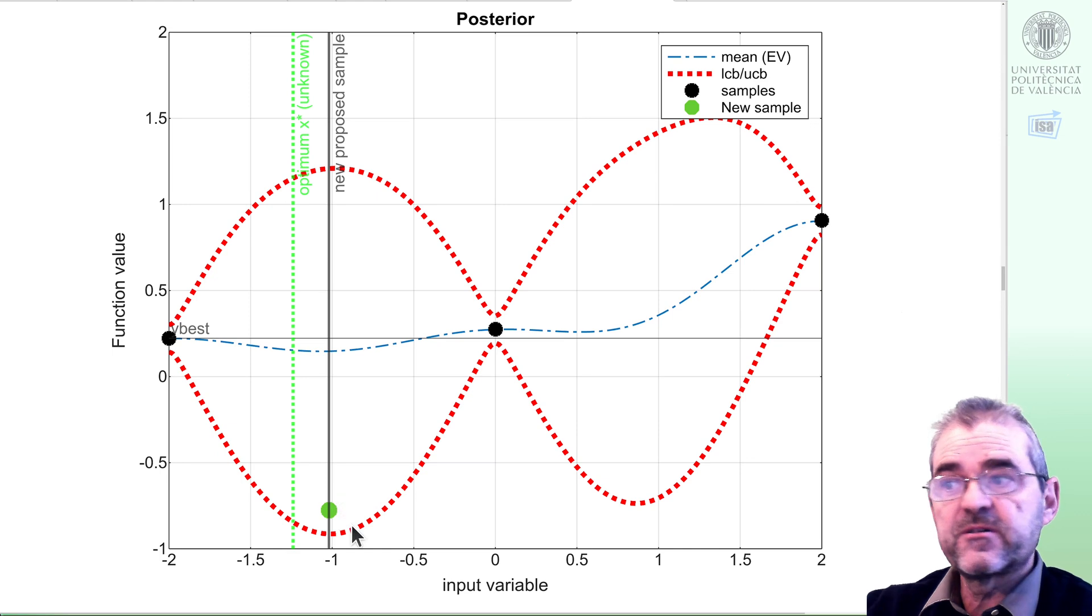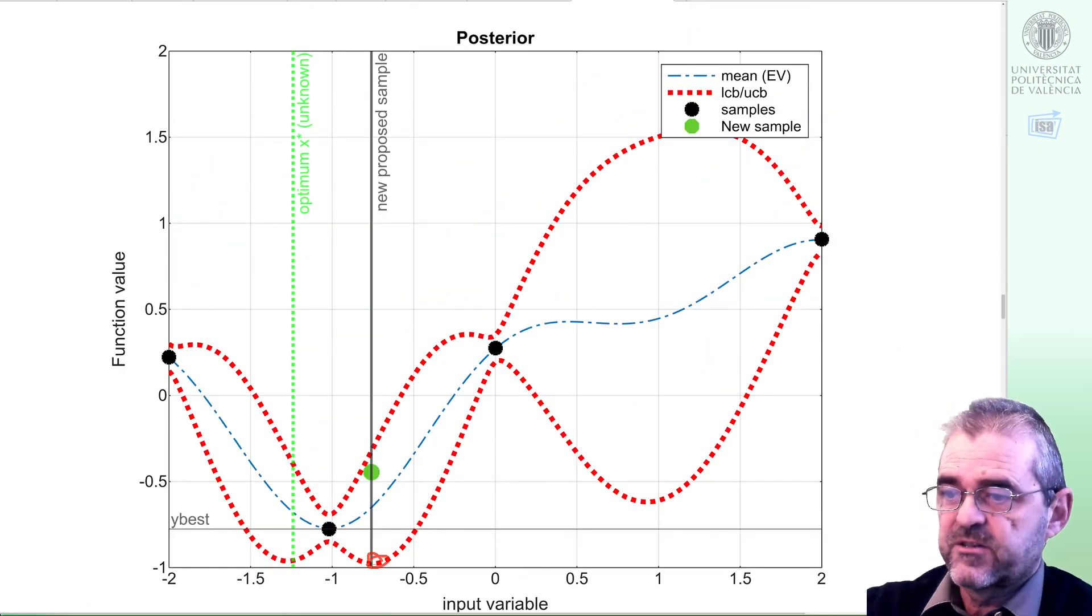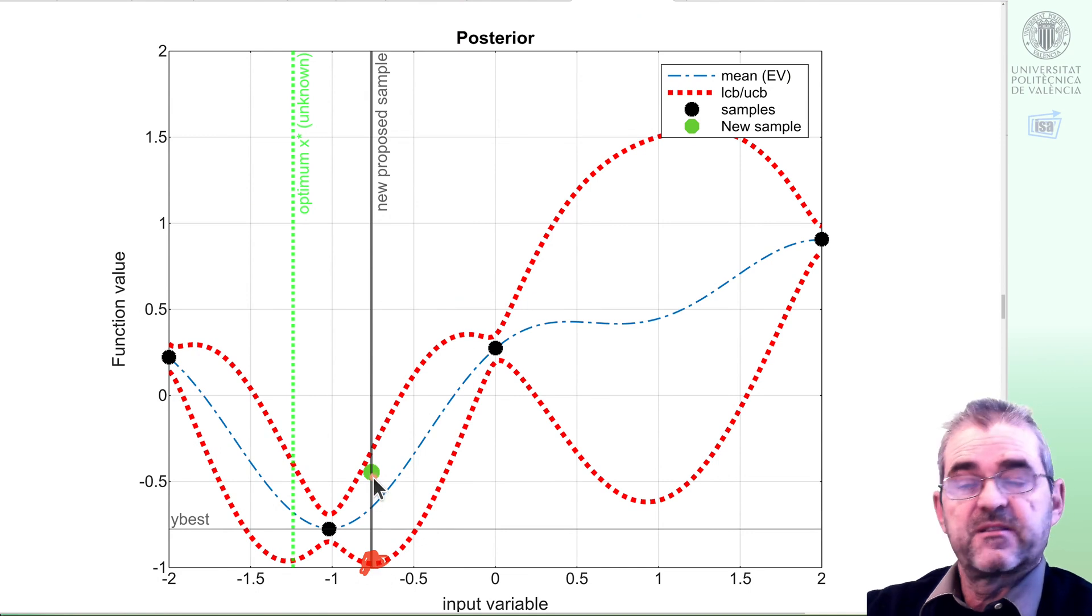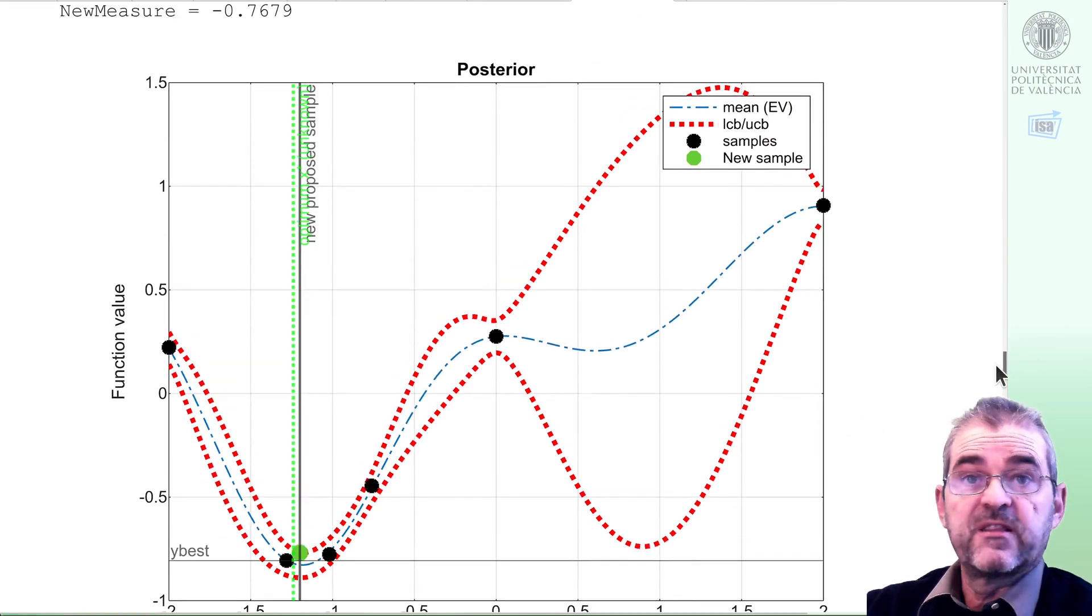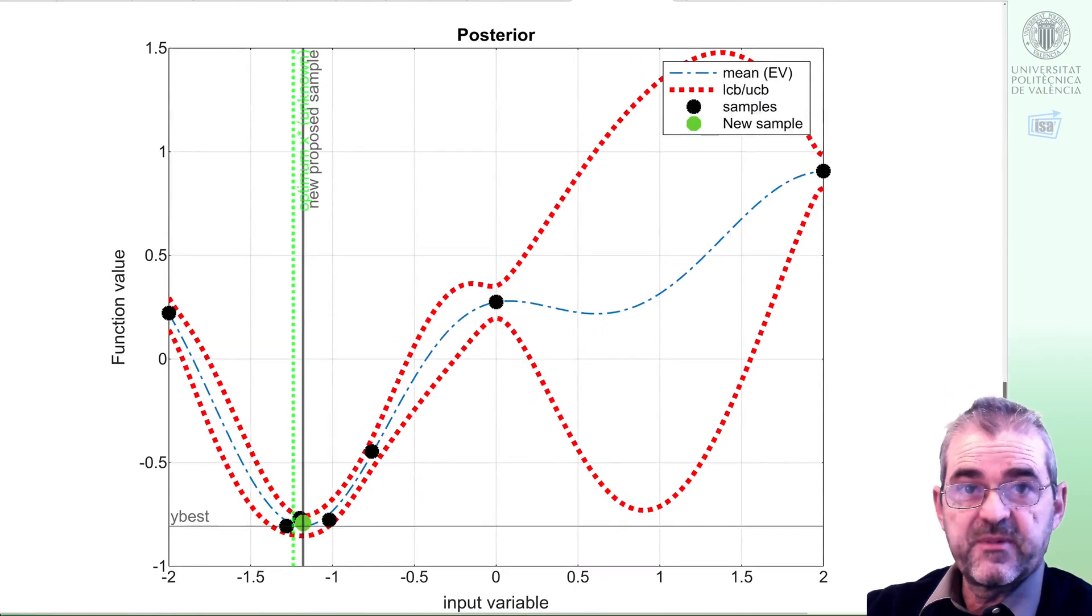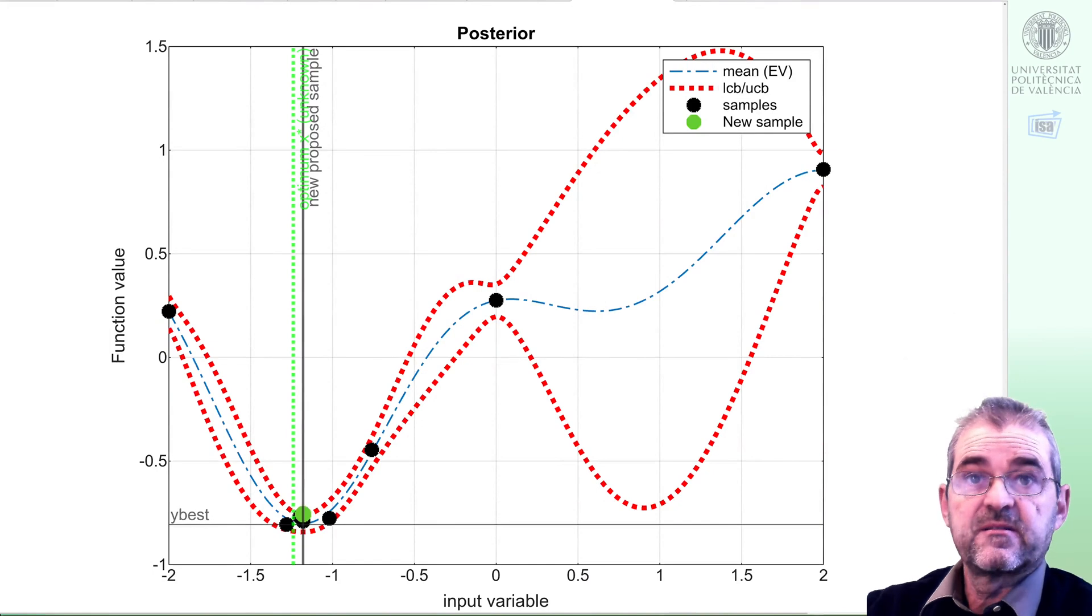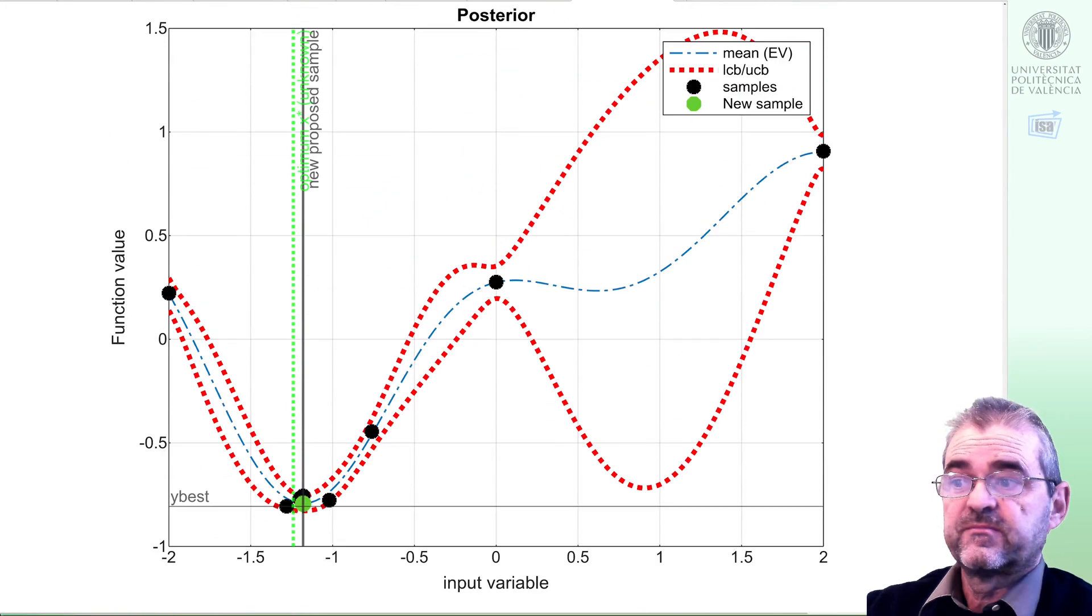We update posterior. Then based on this lowest point here, it recommends this new sample. Now it recommends this one, we are getting close. And if we repeat until we get 12 samples, they start gathering around that point, which hopefully, if Bayesian optimization did work well, would be that global optimum.